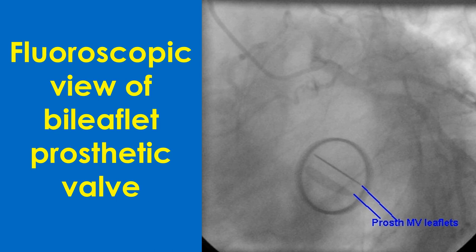Though prosthetic valves are seen well on chest X-ray, they can be evaluated better by fluoroscopy. In fluoroscopy, valve leaflets which are radiopaque can be seen opening and closing at the corresponding time of the cardiac cycle depending on the position of the valve. A stuck leaflet can be easily identified. A fluoroscopic view of a bi-leaflet mitral valve is shown here with leaflets in the open position.